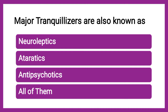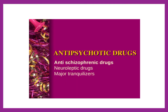Next question: Major tranquilizers are also known as — neuroleptics, ataractics, antipsychotics, or all of them. The correct answer is all of them. Major tranquilizers are also known as antipsychotics, anti-schizophrenic, neuroleptics, and ataractics — all terms meaning to tranquilize or calm the patient.